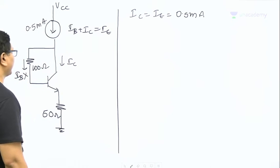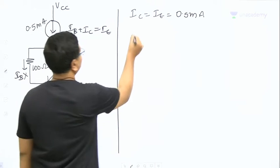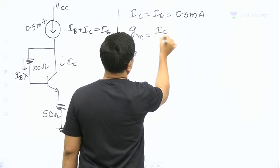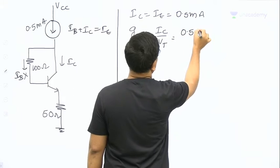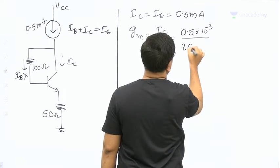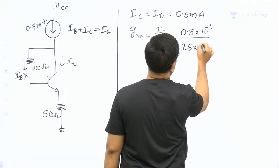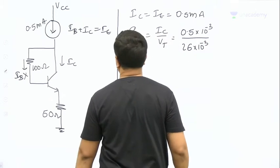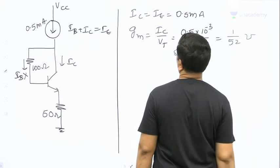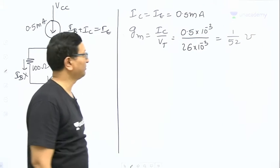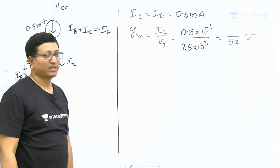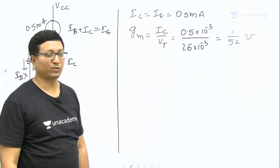Now, what is g_m? g_m equals I_C divided by V_T. I_C is 0.5 milliamperes and V_T is 26 millivolts, so g_m equals 1/52 mhos. The transconductance of the BJT is found to be 1/52 siemens.